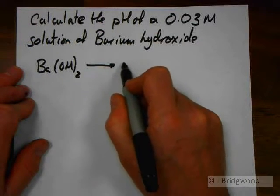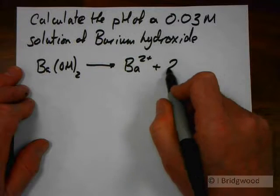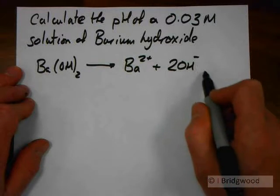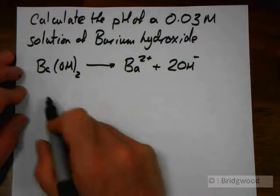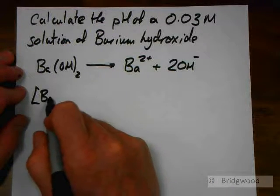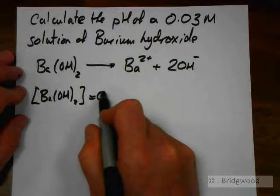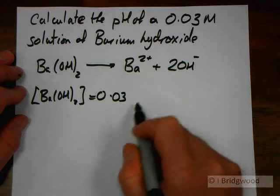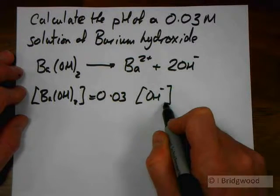That is going to dissociate fully to barium ions and hydroxide ions. And you can see in this particular case, therefore, that whilst the concentration of barium hydroxide is equal to 0.03 moles per cubic decimetre, the concentration of hydroxide ions is going to be twice that.